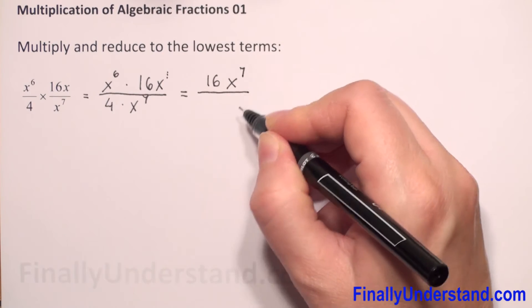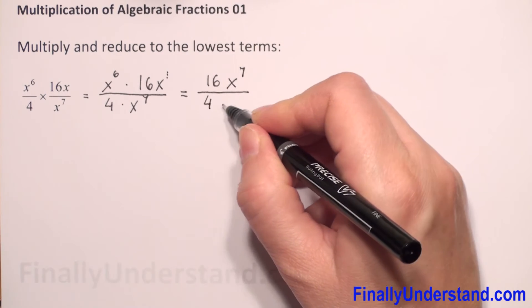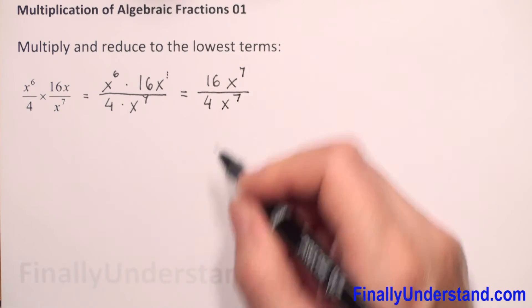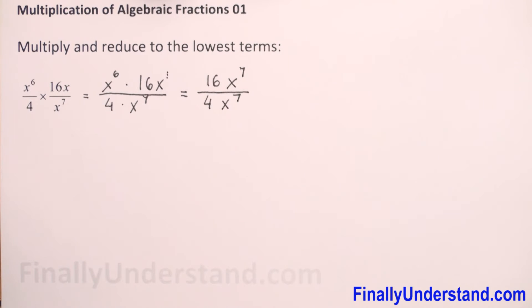In the denominator we have 4x to the 7th power. We have to reduce to the lowest terms.